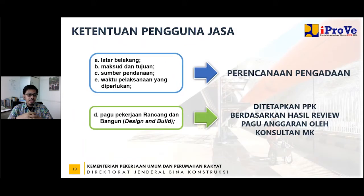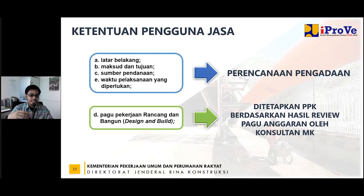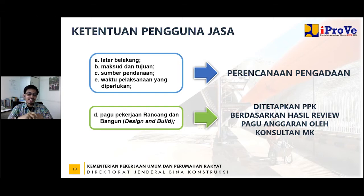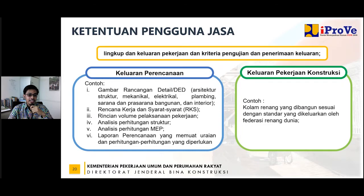Gambaran secara umum terkait dengan latar belakang, maksud dan tujuan, sumber pendanaan, dan waktu itu sebenarnya sudah dilakukan pada saat perencanaan pengadaan di depan. Sehingga kalau itu sudah baik dilaksanakan, tidak butuh effort terlalu banyak untuk melengkapi poin A, B, C, dan E ini. Pagu pekerjaan nanti ditetapkan oleh PPK berdasarkan hasil review pagu anggaran oleh konsultan MK. Untuk keluaran secara umum ada dua: ada keluaran perencanaan dan ada keluaran dari pekerjaan fisiknya. Misalnya keluaran perencanaan adalah DED, kalau fisiknya tentu bangunannya.